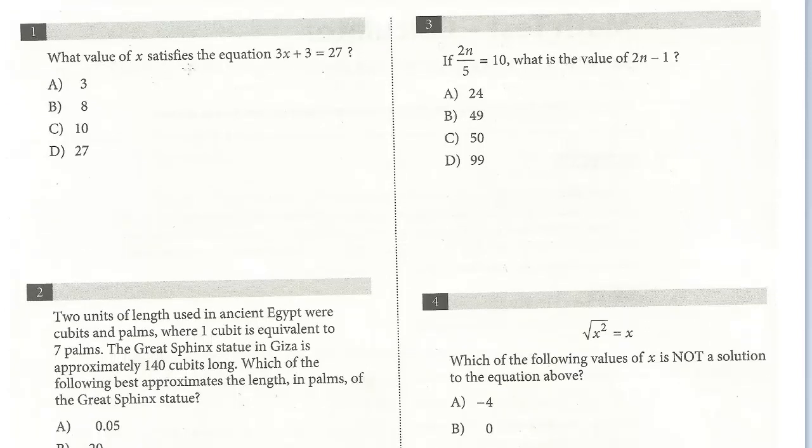Number one: what value of x satisfies the equation 3x + 3 = 27? We just have to solve for x. We can subtract 3 from both sides, getting 3x = 24, so x is simply 8. Pay attention: sometimes the question might ask for something besides the variable, like x + 3, and you'd have to solve for that. But this one just asked for x. So the answer is B.